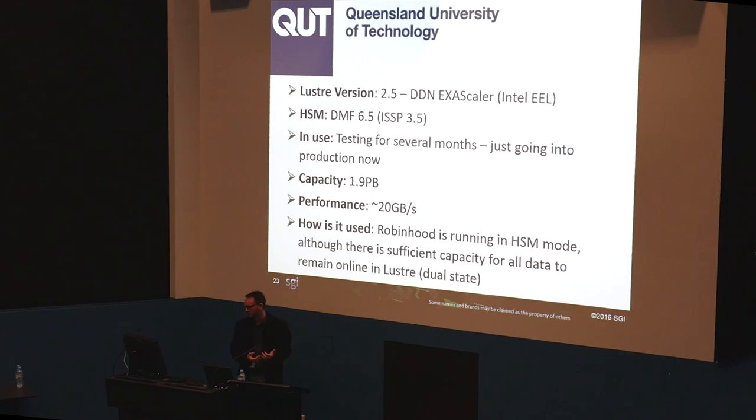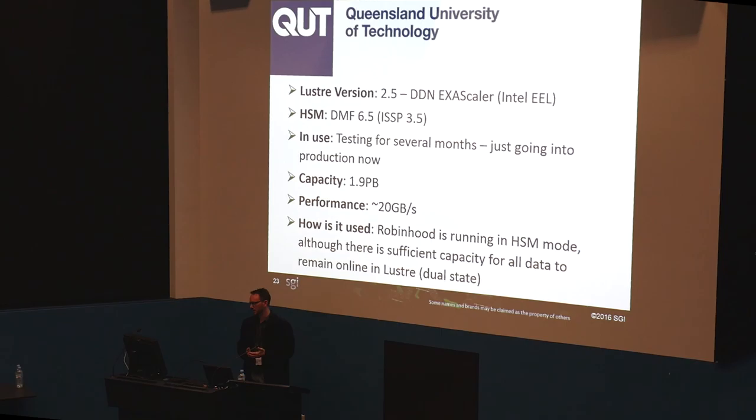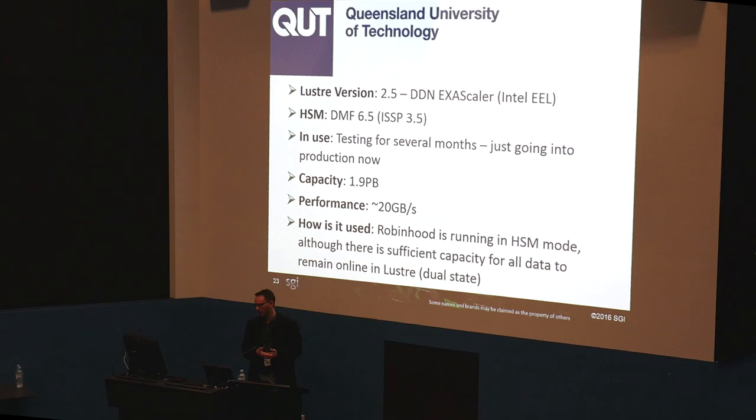Third, the University of Queensland, where we deployed a DDN Exascaler solution. DDN Exascaler presents some challenges since our other customers run LDISKFS-based Lustre, so we worked with DDN to ensure a smooth deployment. They did testing for several months and are just going into production now. It's a 1.9 petabyte system at 20 GB/s. At the moment they don't have more data than their Lustre cache, so they're running in a dual state and have quite a while before the HSM capabilities become fully utilized.